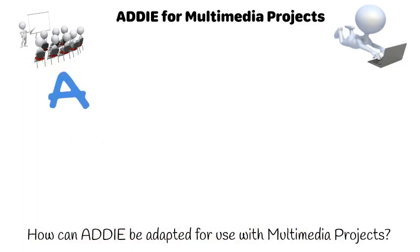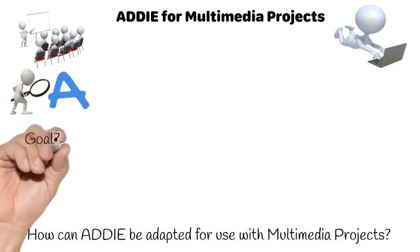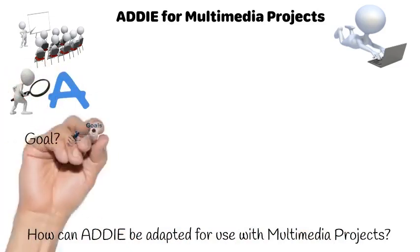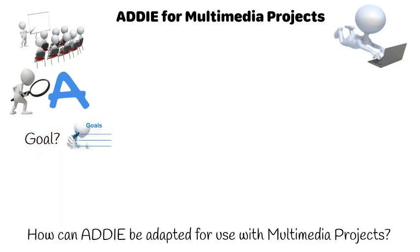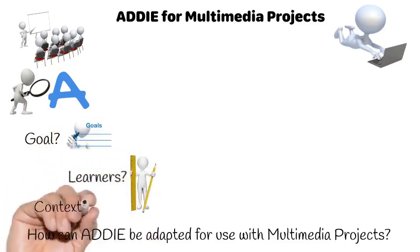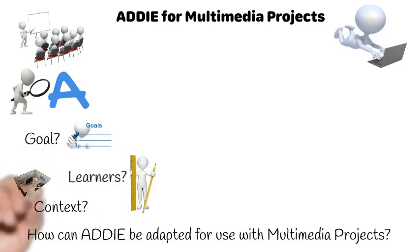A is for Analysis. In this phase, we look at what the project goal is, who the learners are, and what the context of the project is. We also look at any constraints that there might be, such as limitations on available technologies.